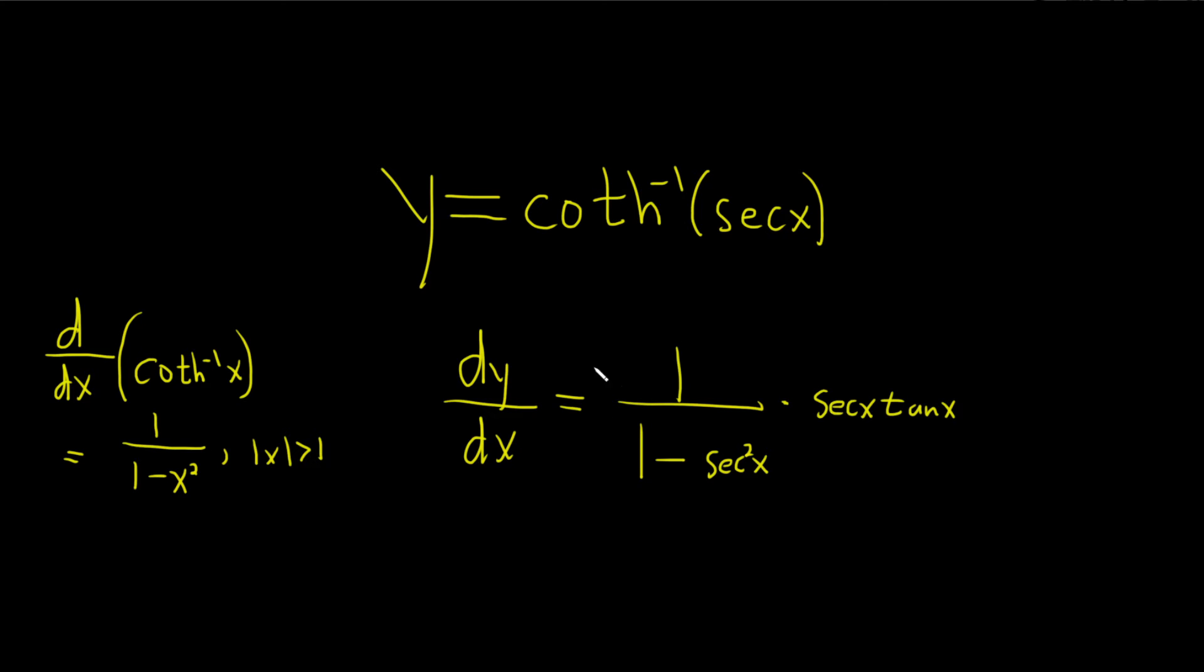So again, take the derivative of the outside, so we apply this formula, leave the inside untouched, and then multiply by the derivative of secant, which is secant tangent. So this is equal to secant x tangent x over 1 minus secant squared x.